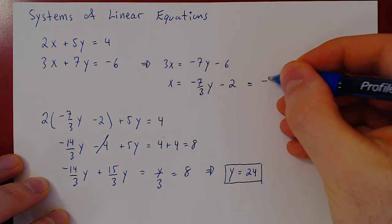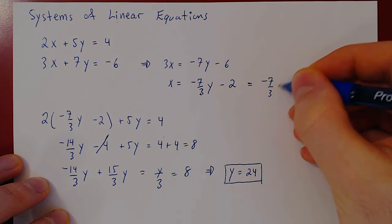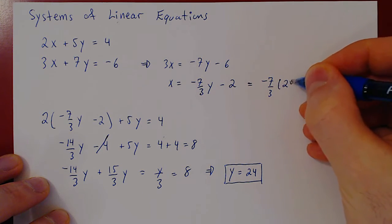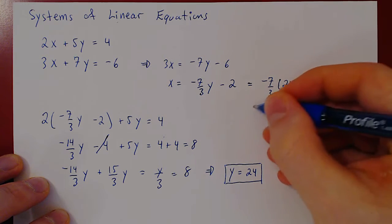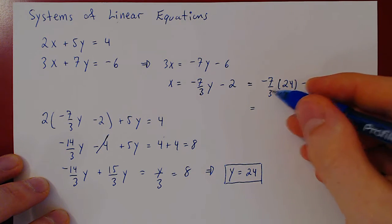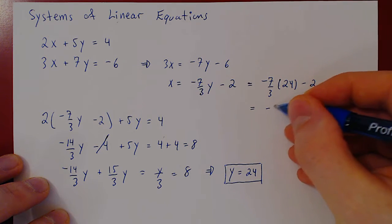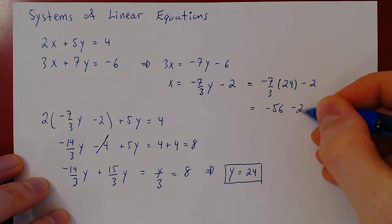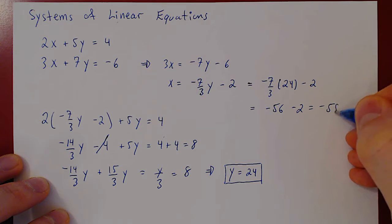So what do we get? Negative 7 over 3 times 24 minus 2. 24 over 3 is 8. 8 times 7 is 56, so negative 56 minus 2 gives us negative 58.